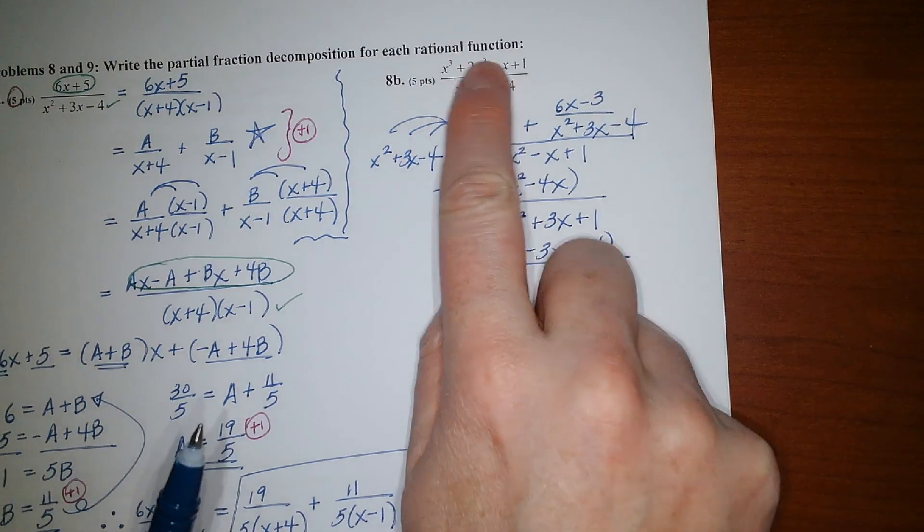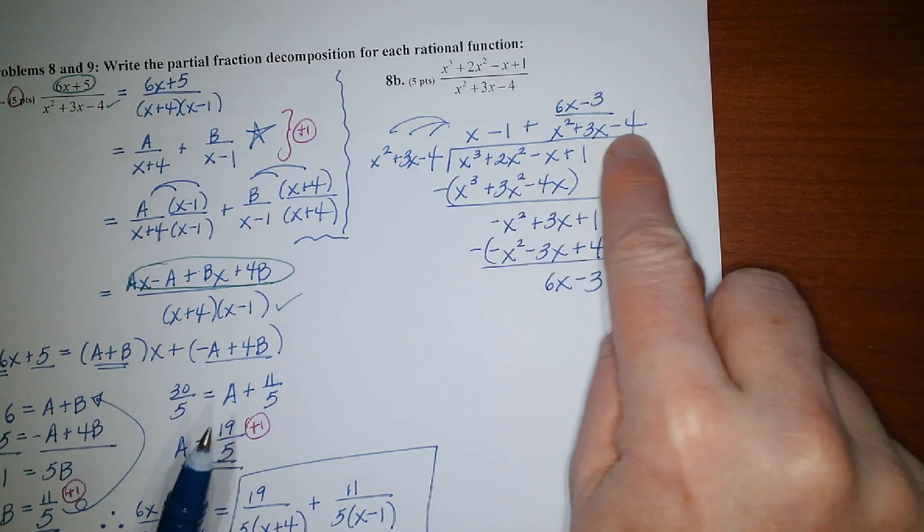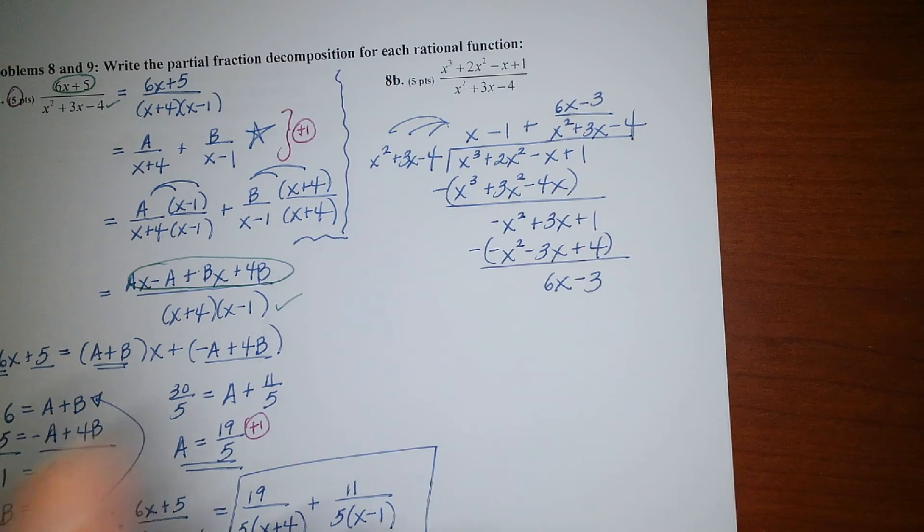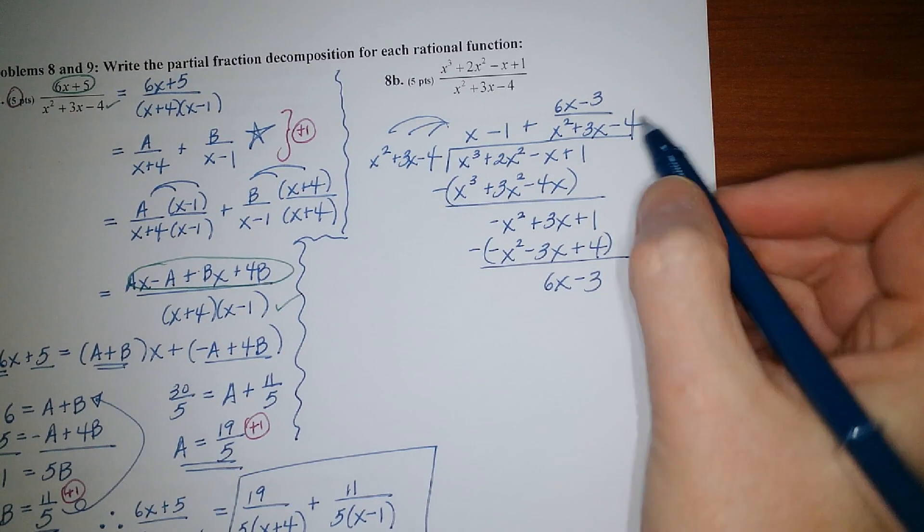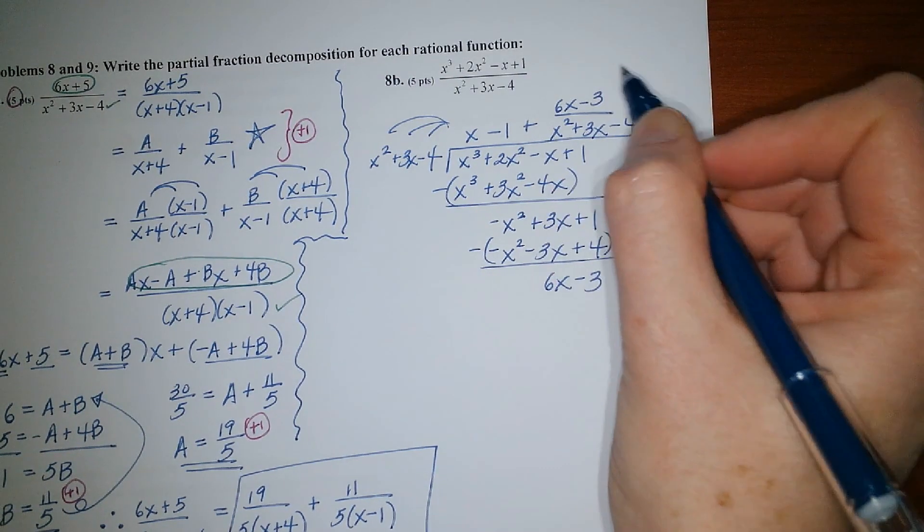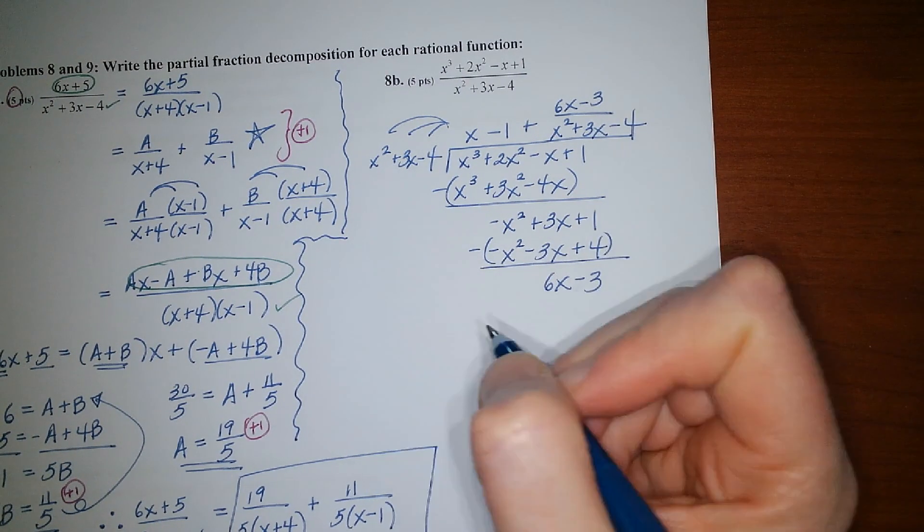So we now know that the original fraction is equal to this expression right here. And then the only reason we're not done is because we actually haven't done partial fraction decomposition on anything. So the point is to take this remainder and then find its partial fraction decomposition.